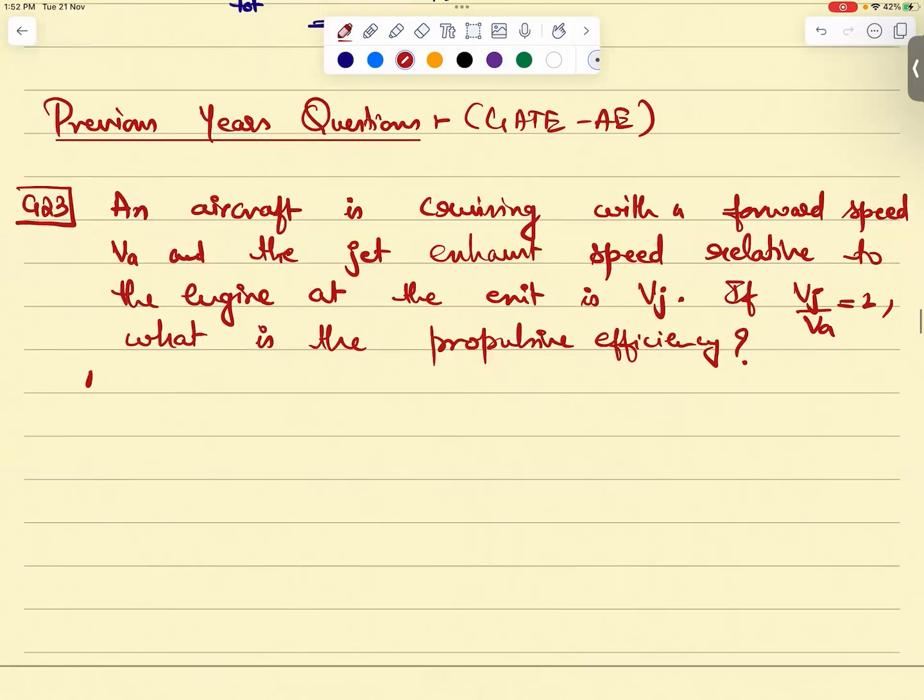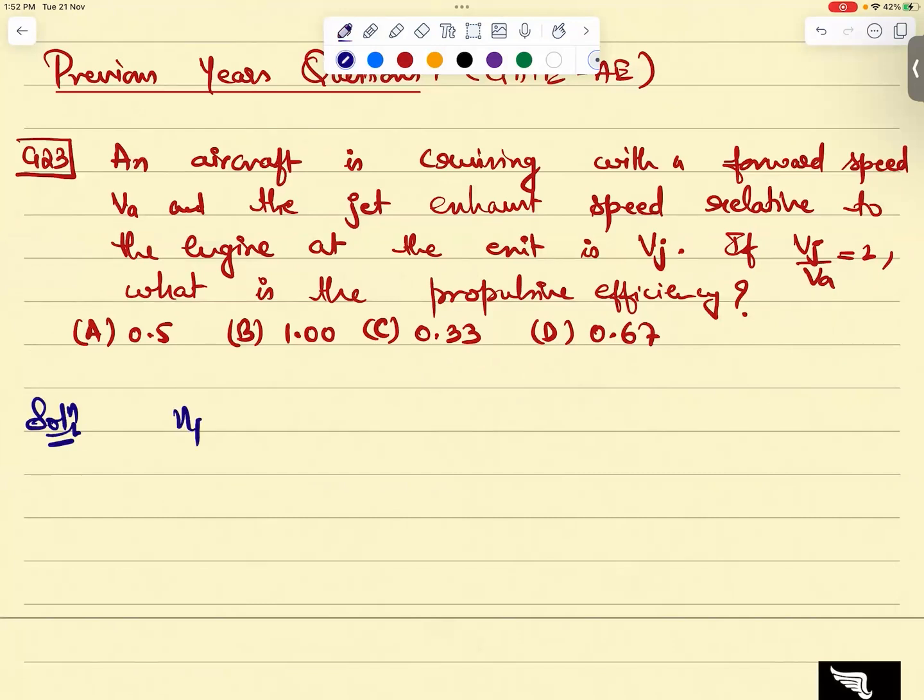Option A: 0.5, option B: 1.00, option C: 0.33, option D: 0.67. The answer is option D. Good. Formula batao, propulsive efficiency is 2α/(1 + α). So what is alpha? VA by Vj.